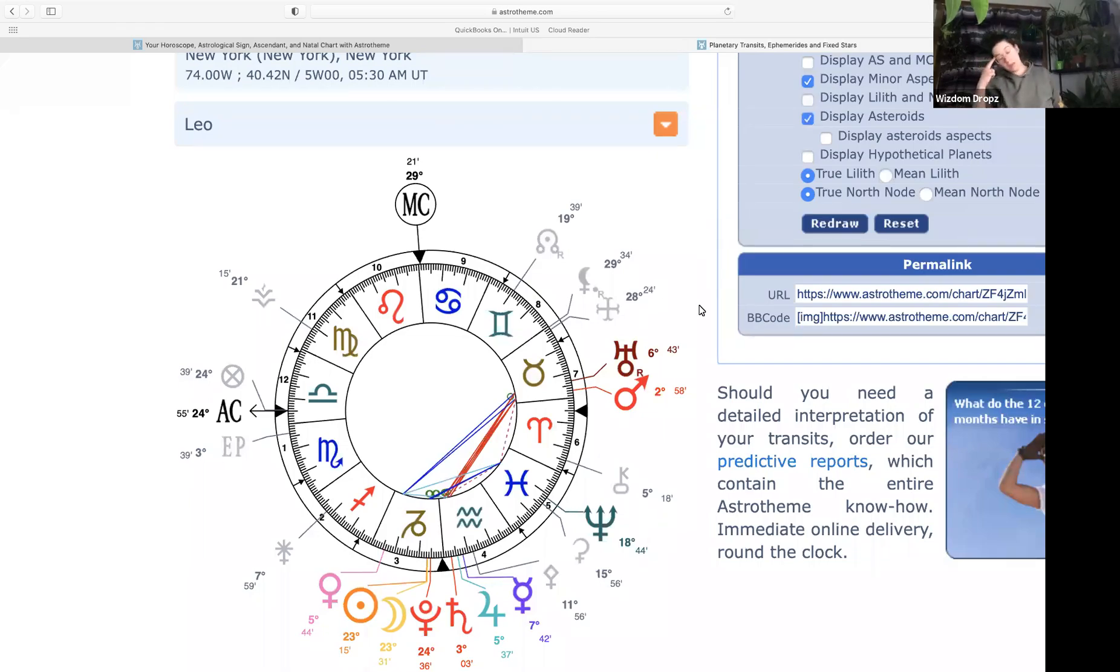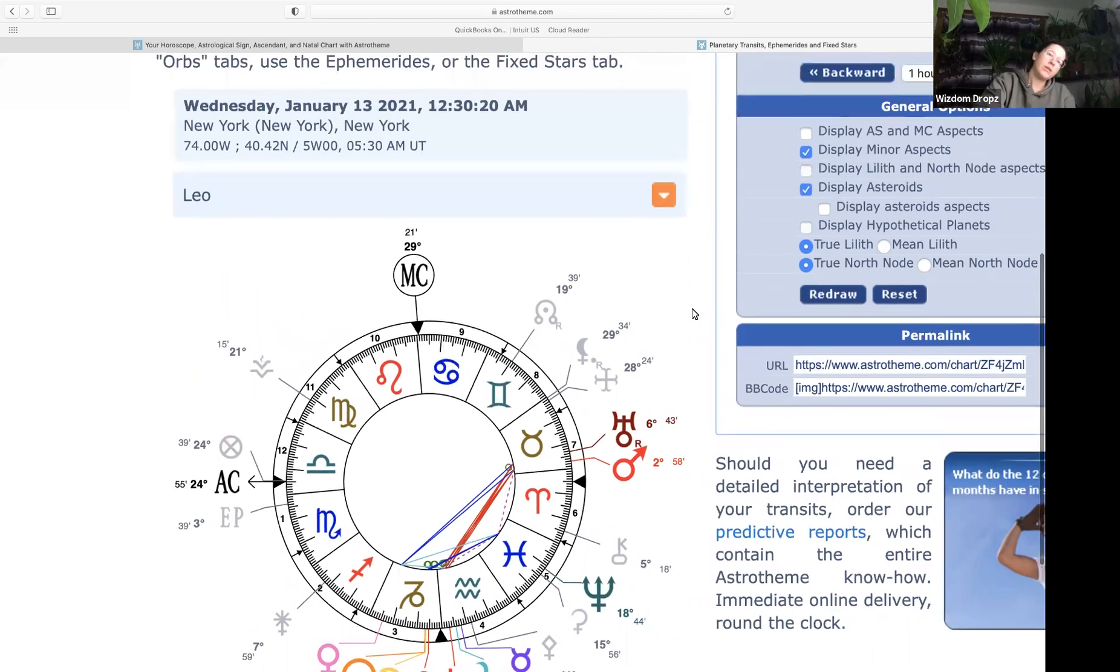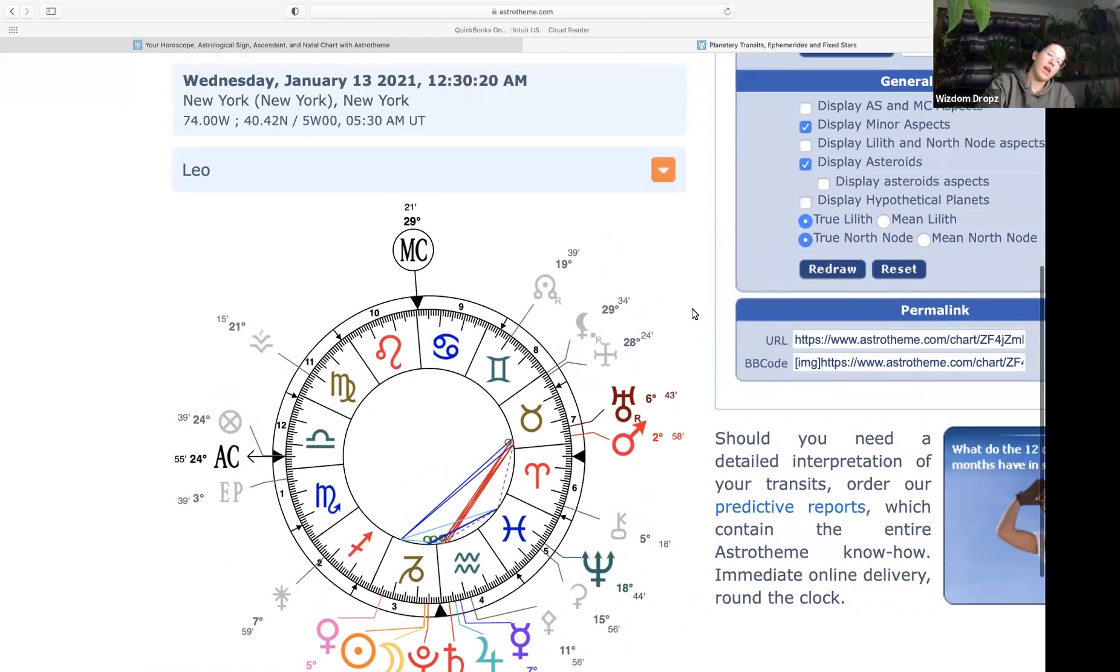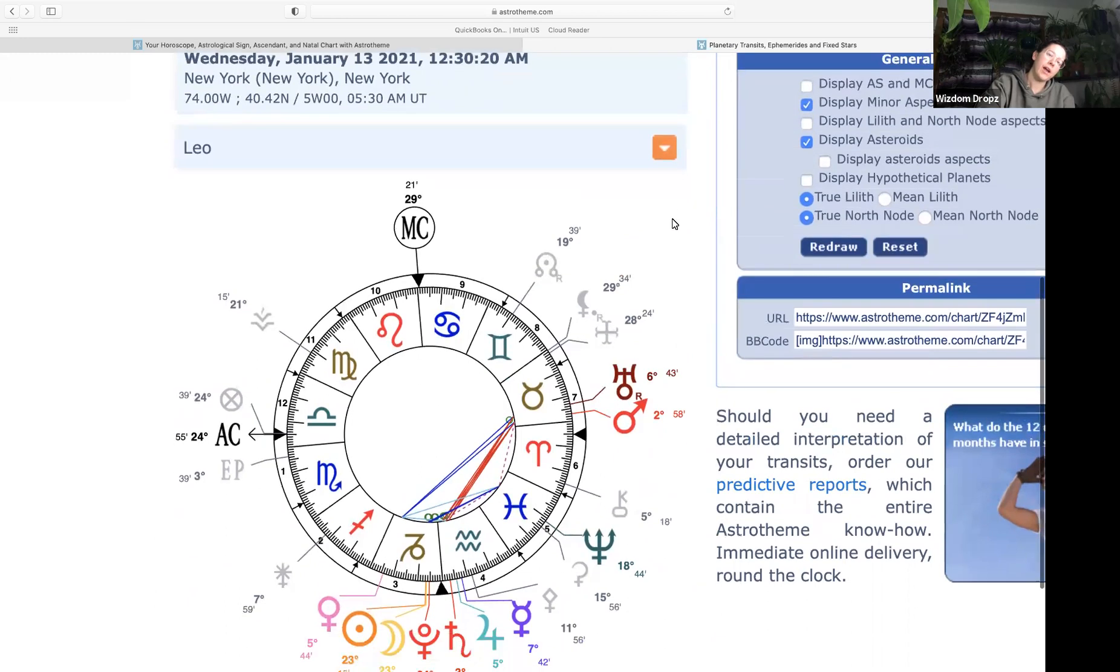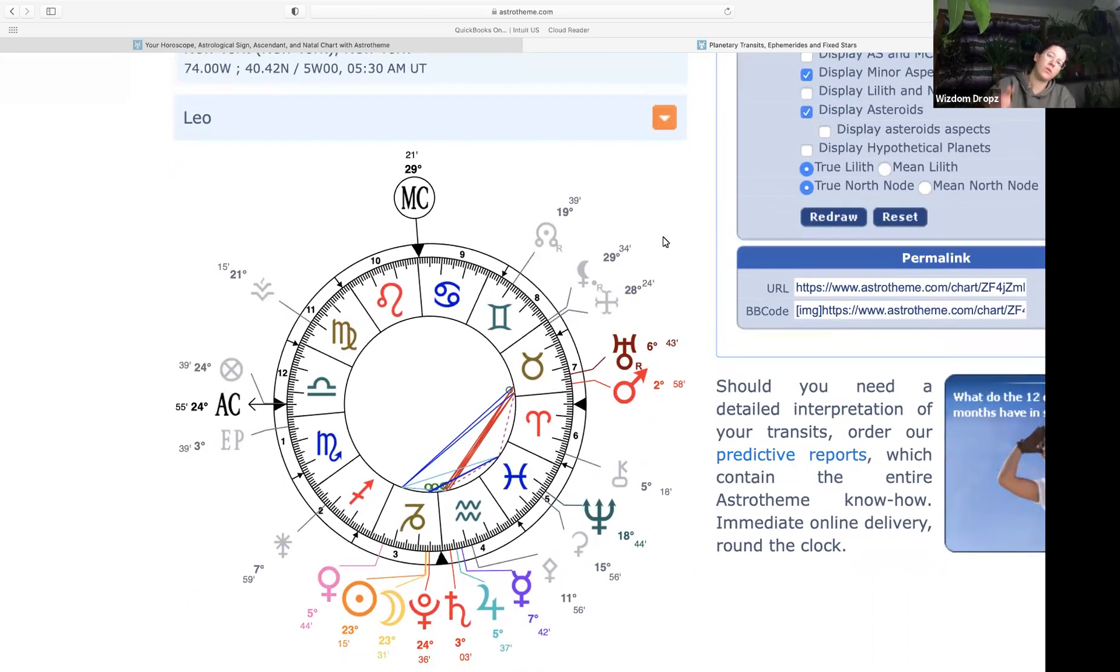Greetings earthlings, wisdom keepers, wisdom seekers. Welcome back to Wisdom Drops, your source for daily drops of wisdom and savvy cat astrology. My name is Tanya, and today we are discussing the Capricorn new moon happening on January 13th, early in the morning for you Capricorn ascendant, sun or moon people.